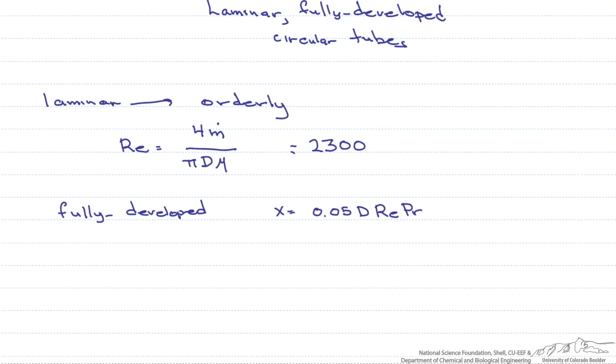What we are looking for is our convective heat transfer coefficient. And we get that from the Nusselt number which is equal to H times the diameter divided by the thermal conductivity of the fluid.